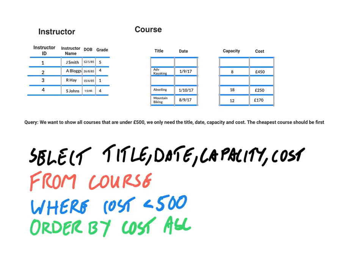The next step is to sort those results into ascending order of cost. The first result would be mountain biking, the second would be abseiling, and the third would be advanced hiking. If you look at the cost values, you can see they are in ascending order.